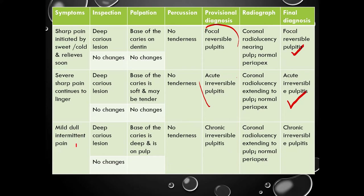Next, the patient may report with mild dull intermittent pain, which is an indication of a chronic lesion. On inspection, again deep caries lesion and no soft tissue changes. On palpation, no soft tissue changes and the base of the caries is deep and is on the pulp. On percussion, no tenderness. The diagnosis is chronic irreversible pulpitis. Remember: on percussion, if there is tenderness, that means the periapical region is involved, whereas in a pulpal condition, the periapex is healthy. Hence there is no tenderness in any of these pulpal conditions. On radiograph, coronal radiolucency extending to the pulp with a normal periapex. Diagnosis: chronic irreversible pulpitis.